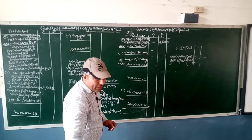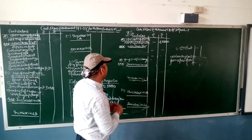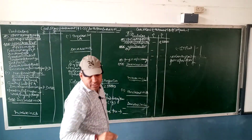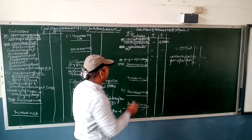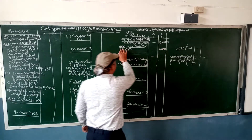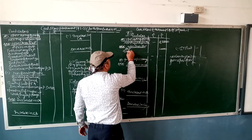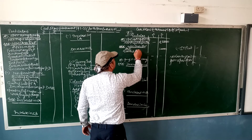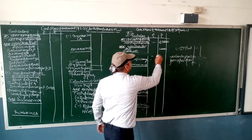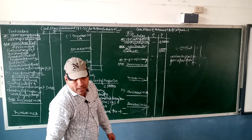Depreciation on fixed assets is given as 10,000 rupees, so here we add 10,000 plus, because it is added back. Then amortization of goodwill — goodwill written off — how much goodwill is given? 5,000 rupees.